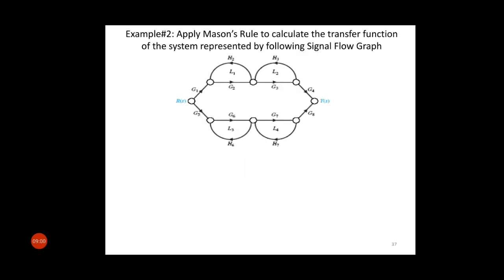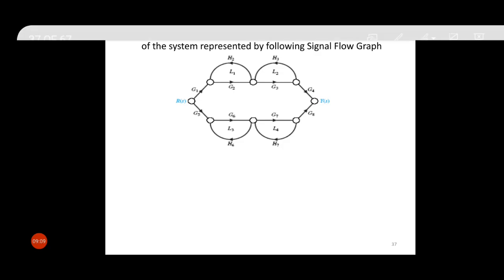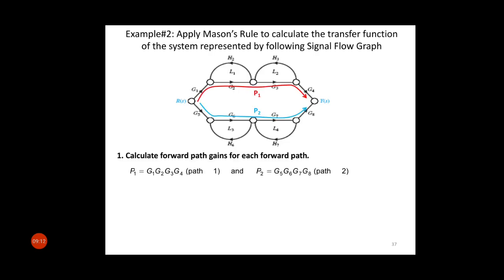Now we move to the next example. First we check how many forward paths there are. There are two forward paths, indicated by P1 and P2. The first forward path (red line) has gain P1 = G1*G2*G3*G4, and the second forward path (blue line) has gain P2 = G5*G6*G7*G8.